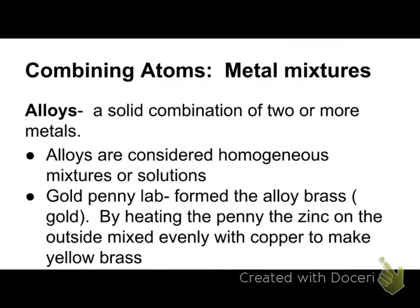Another way to make brass — you don't have to know this — is to grind up copper into small granules, grind up zinc into small granules, and melt the two together. That liquid can be poured into molds. Some pennies came out more yellow than gold because of a different percentage of zinc coating.